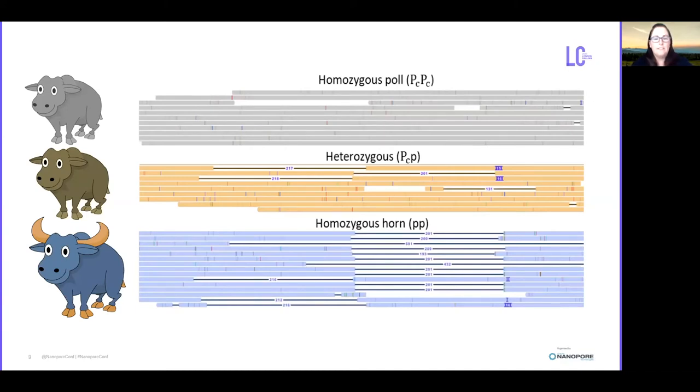And what we could see very clearly at the polled locus is that in the case of the homozygous polled bulls, both copies of the duplication were present, and you can see this in the gray alignments by the lack of any deleted regions. In the heterozygous animals you can clearly see that there is a mixture of both reads with one copy and reads with two copies of the duplicated region, and additionally you can see that small 10 base pair deletion just up the top there.